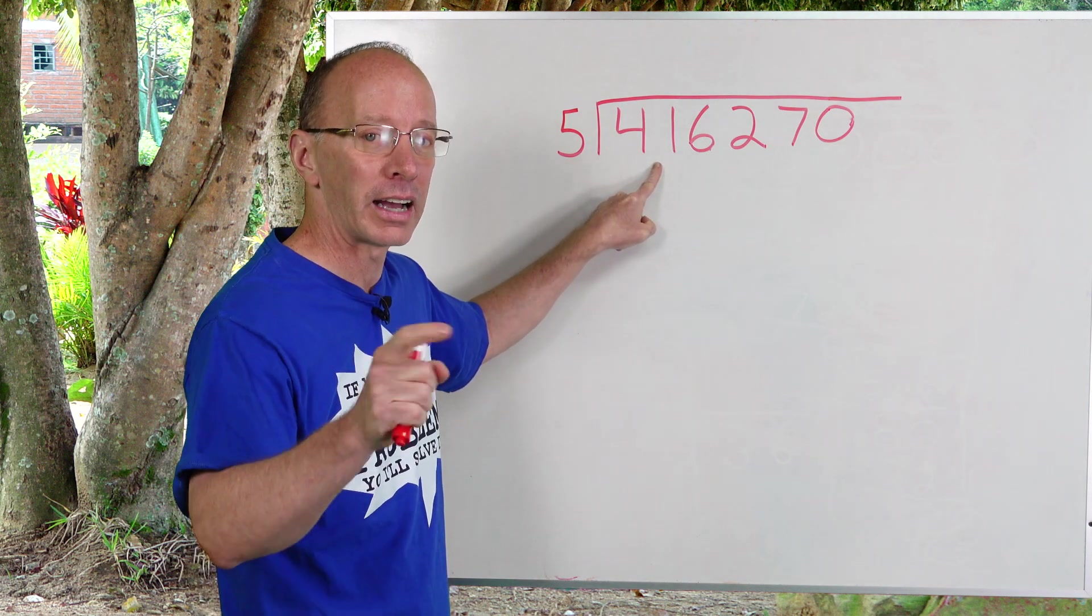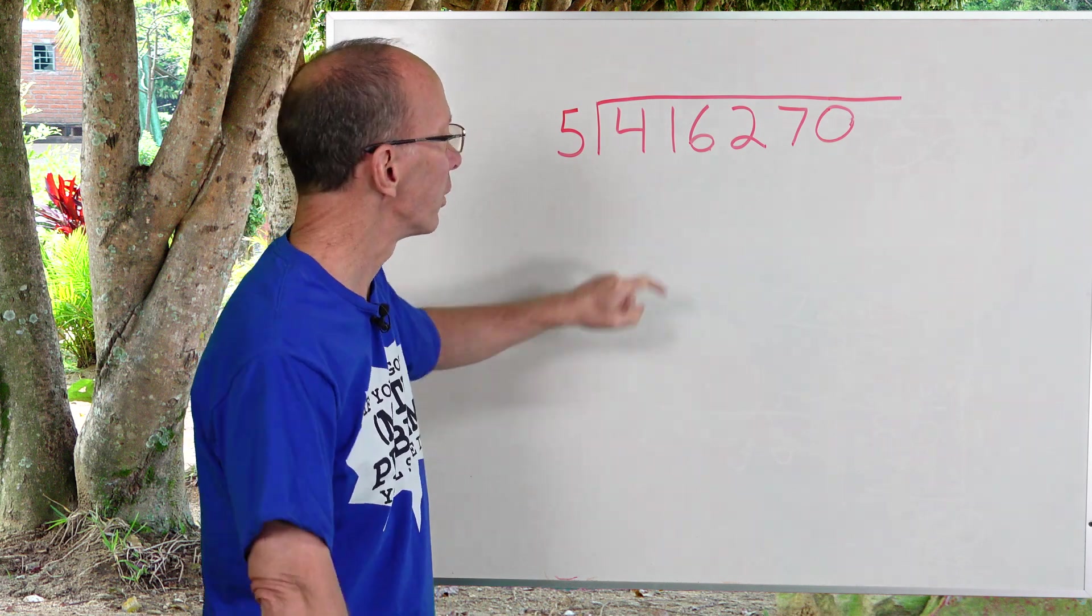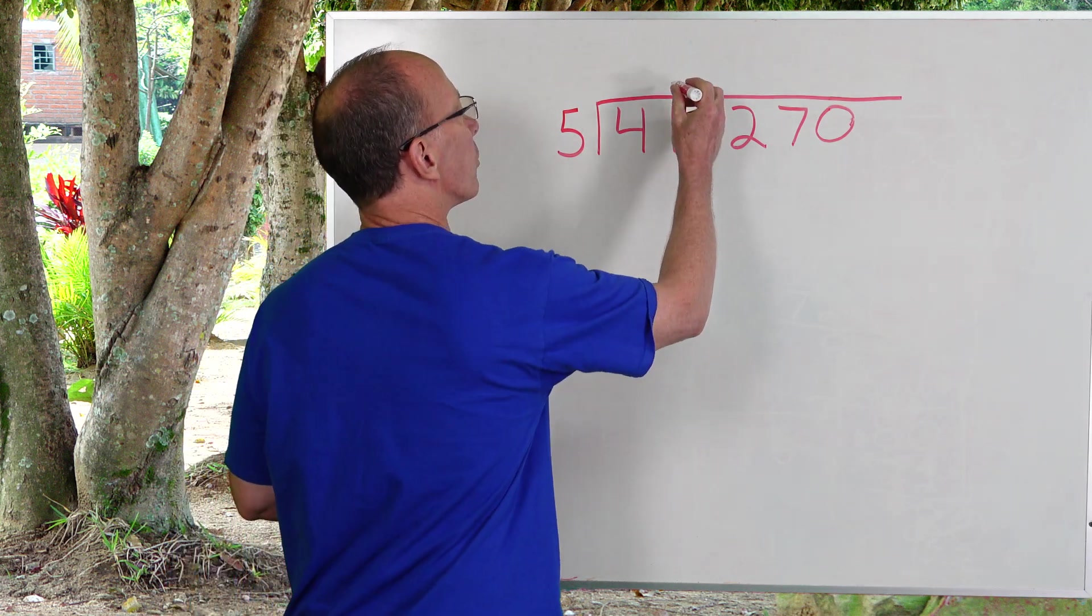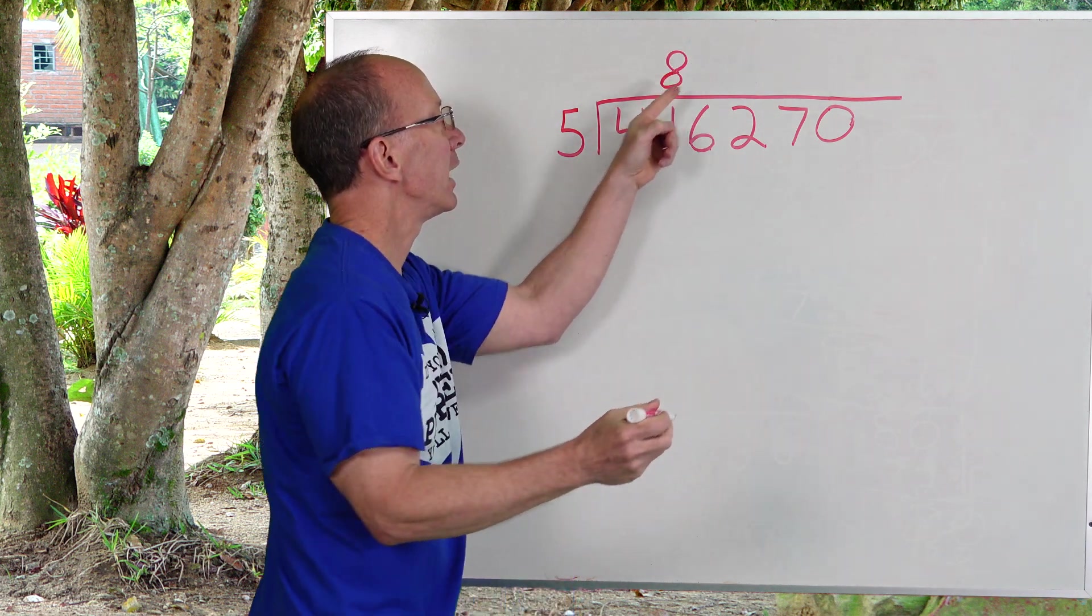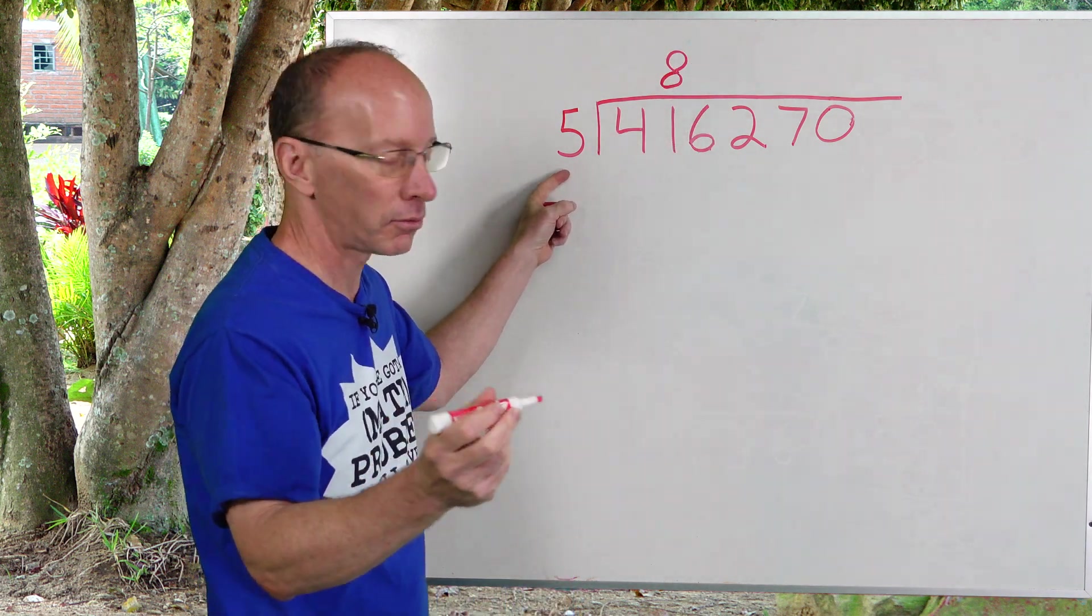Eight times. Five times eight is 40. Yeah, so I put the eight right here, I put it right above that one right here. All right, so eight times five is 40.